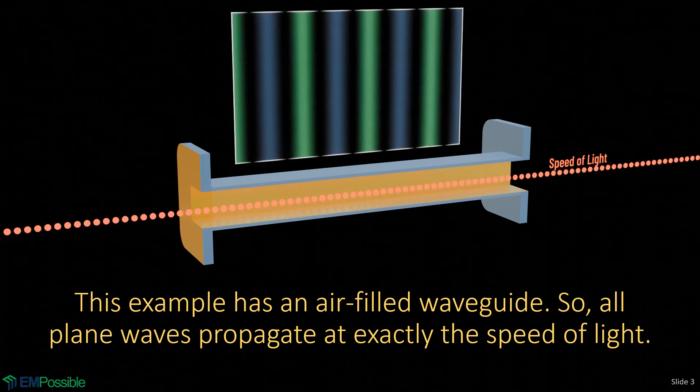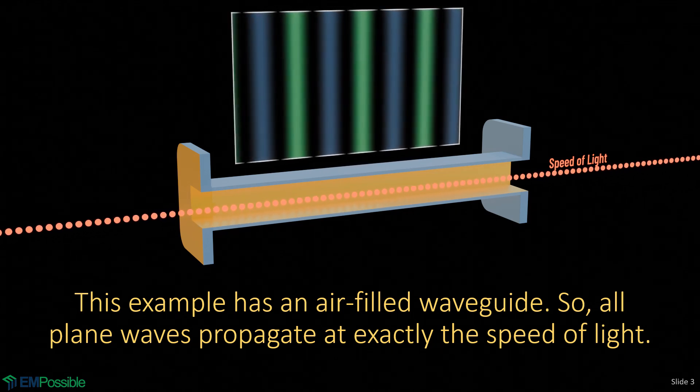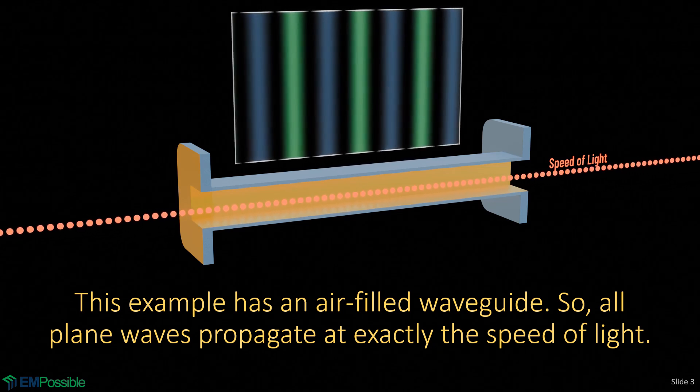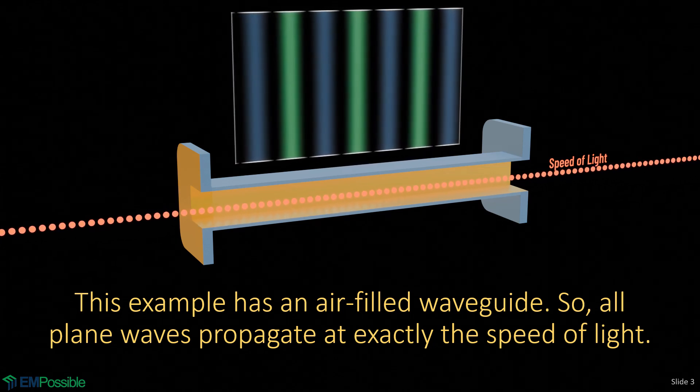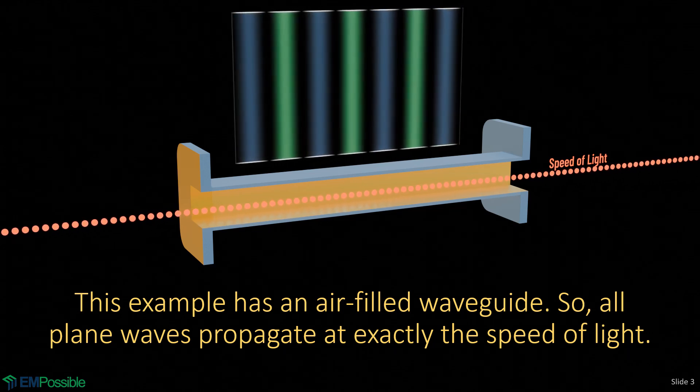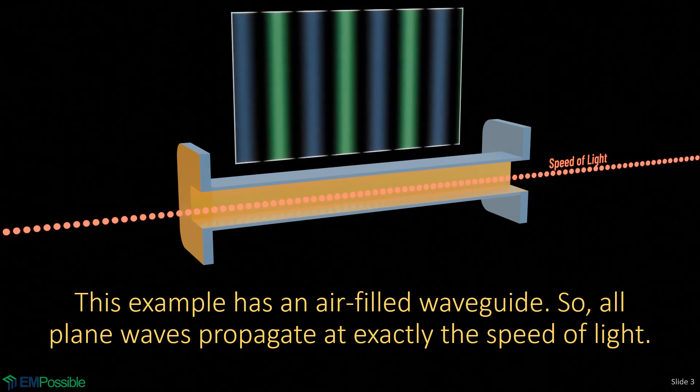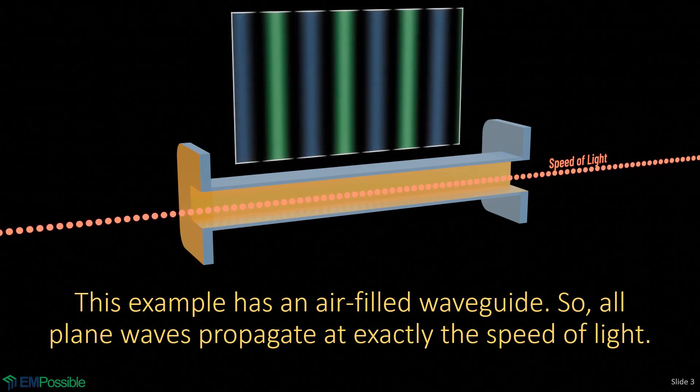So I want to talk you through what's really going on here. And I'm going to start by saying, since this is an air-filled waveguide, we have air or vacuum everywhere. And I'm going to be drawing a plane wave like we have here. Every single wave here is traveling exactly at the speed of light because we have air everywhere. So keep that in mind.